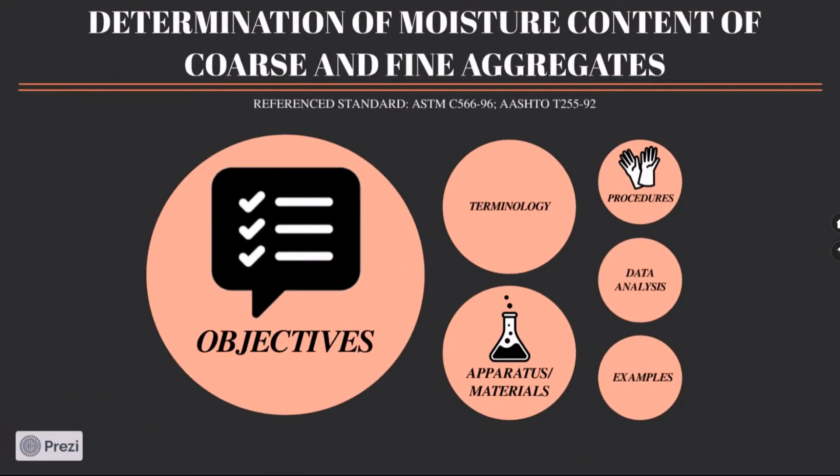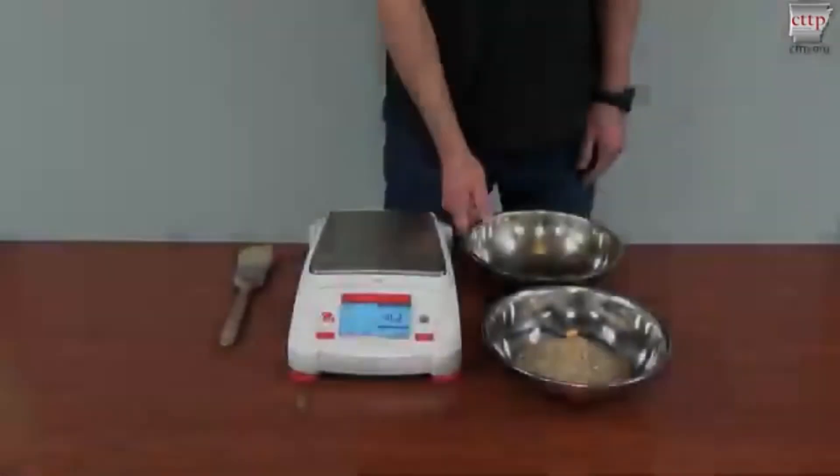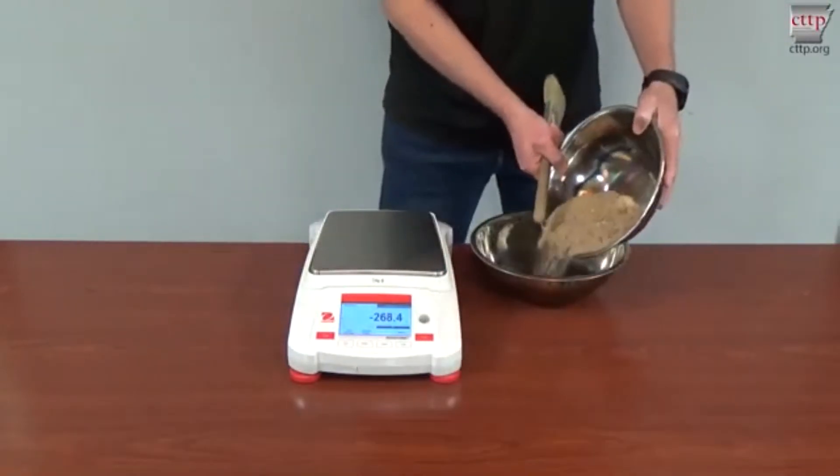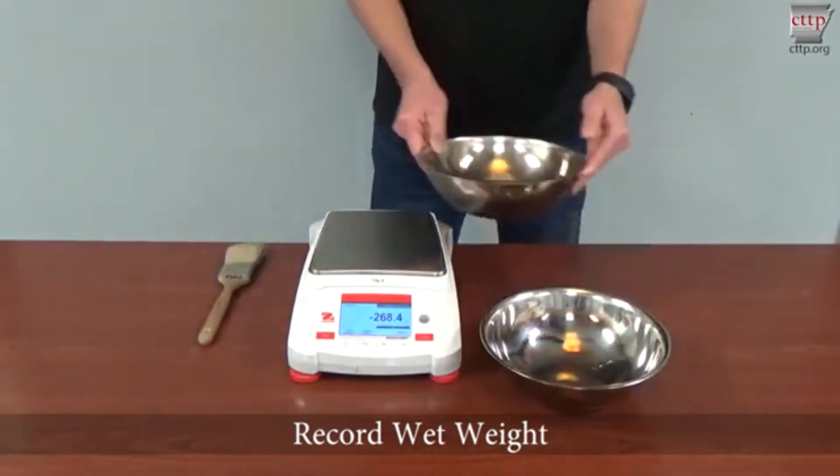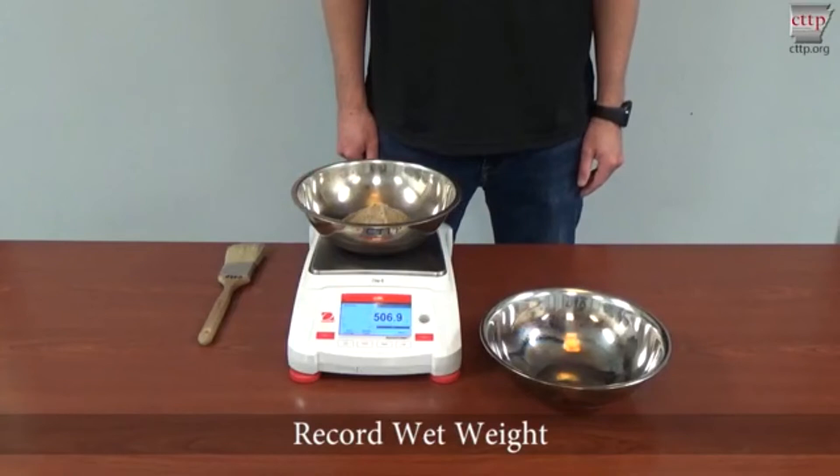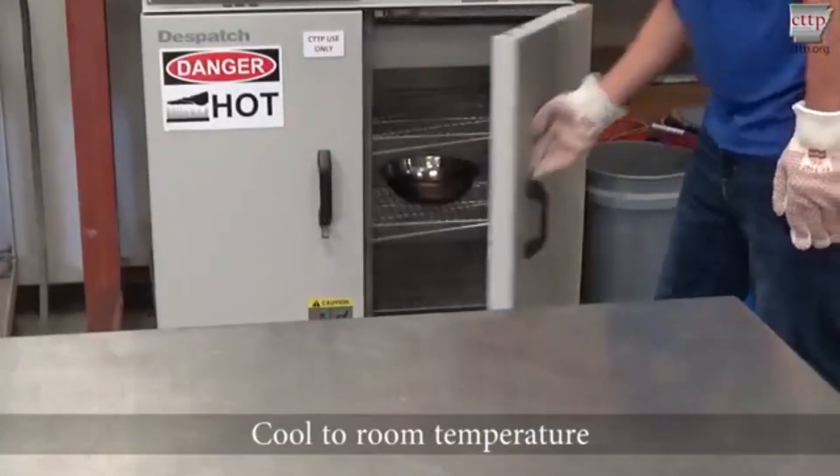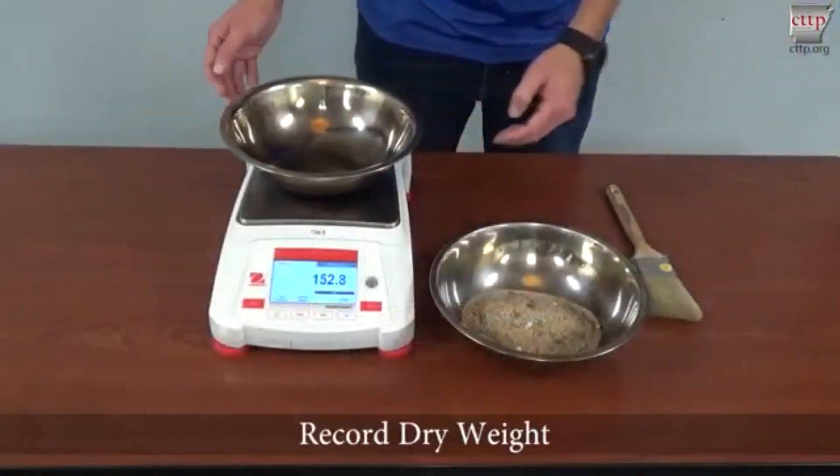To help you understand the procedures, I provided two examples via YouTube videos: total evaporable moisture content of aggregate by drying. Obtain a representative sample and ensure that the sample weight meets specification requirements. Tare the pan. Alternatively, record the empty weight of the pan. Record the wet weight of the sample. Record the dry weight of the sample. Dry the sample to a constant mass at 230 plus or minus 9 degrees Fahrenheit. Cool to room temperature. Record the dry weight of the sample.